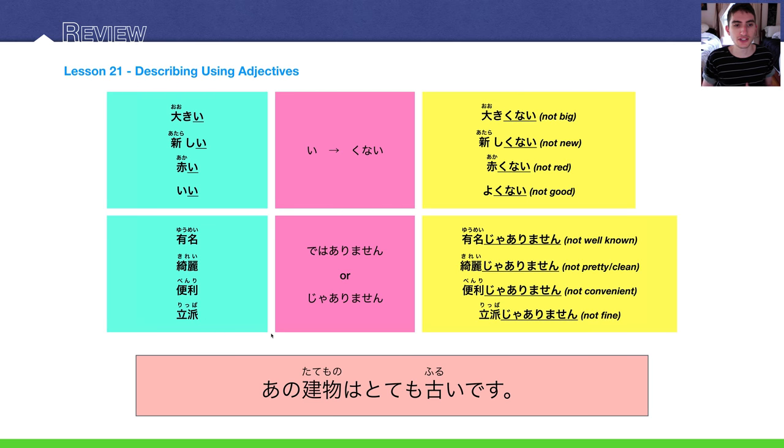And to conjugate those into the negative form, you conjugate them like desu, as if they had desu at the end. So, negative would be dewa arimasen or ja arimasen. Yuumei ja arimasen - not very well-known. Kirei ja arimasen - not really clean. Benri ja arimasen - not convenient. Rippa ja arimasen - not fine or splendid.